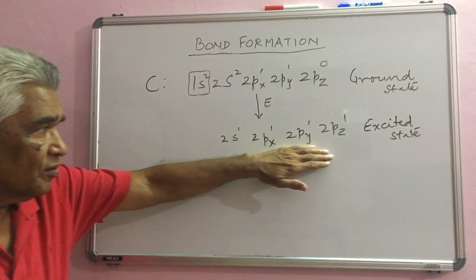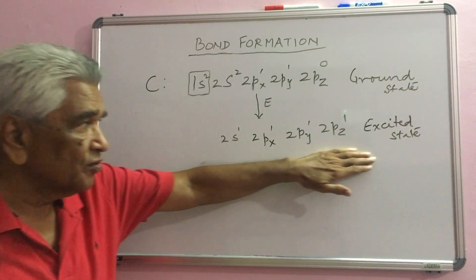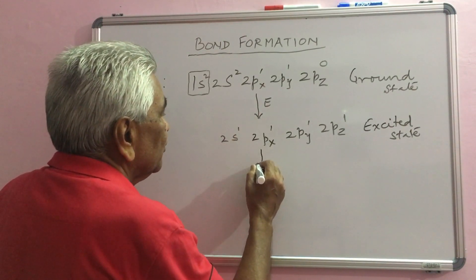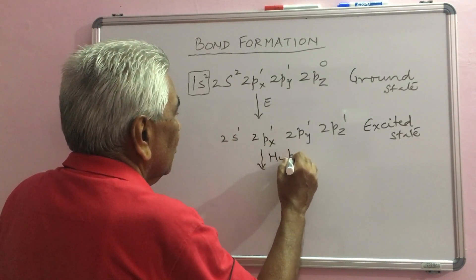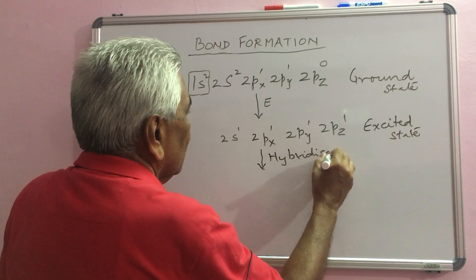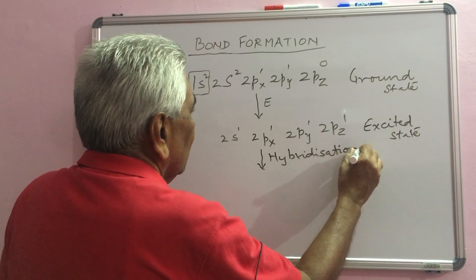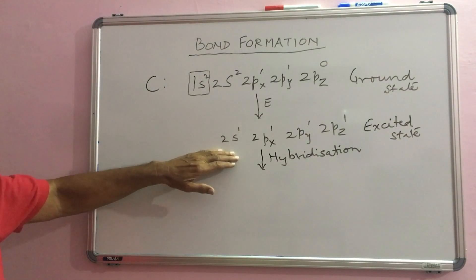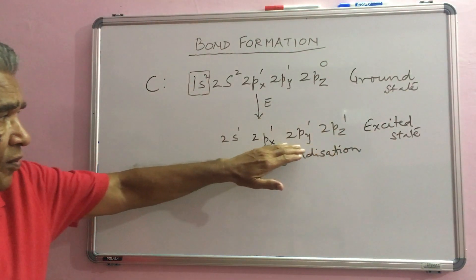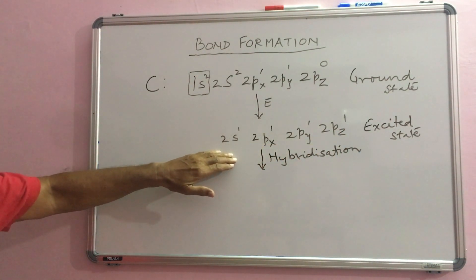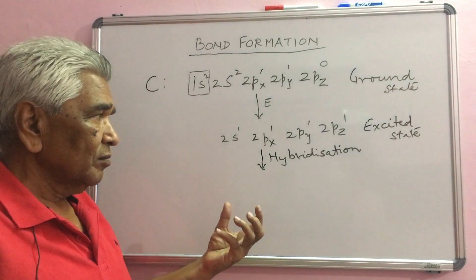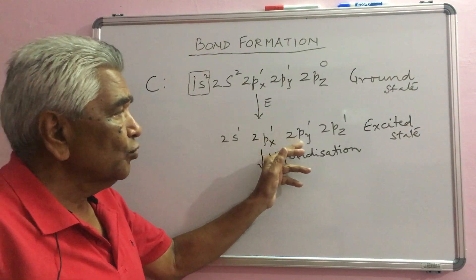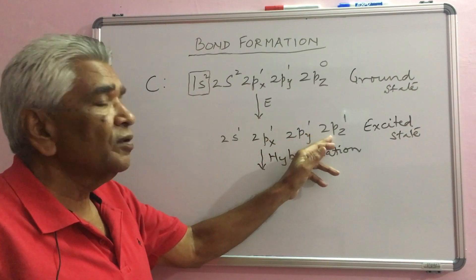In this state as soon as this state is reached carbon undergoes hybridization. Hybridization is a process in which the orbitals of same energy level undergo blending, thereby forming the same number of new hybrid orbitals.